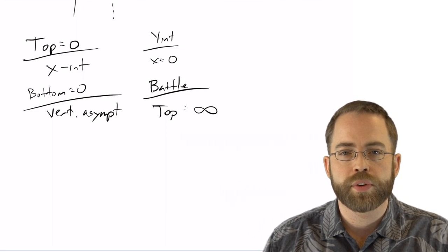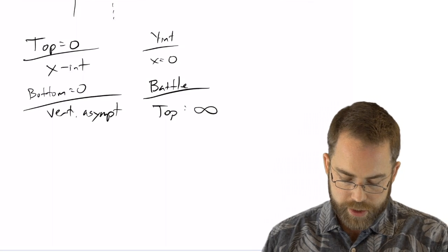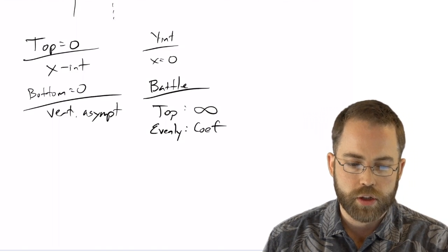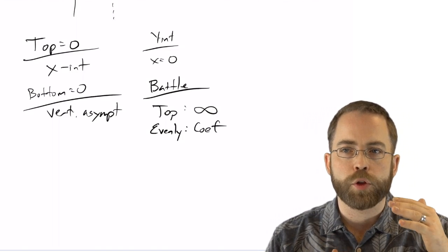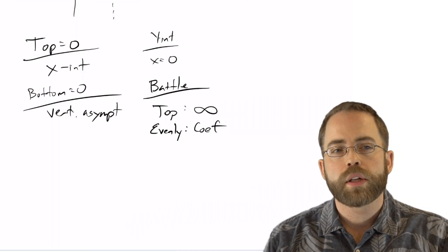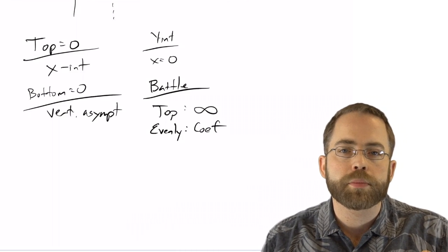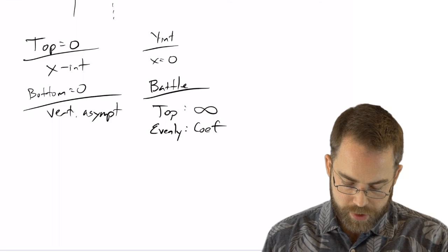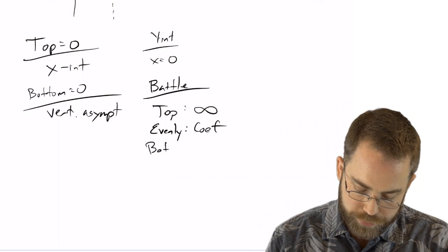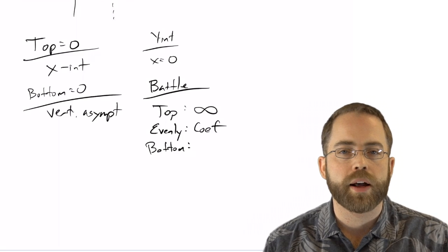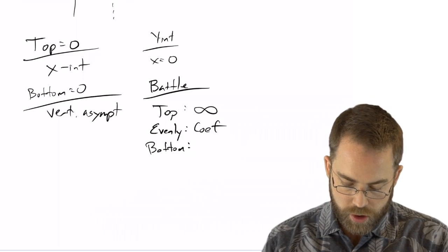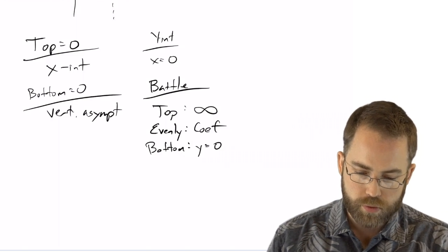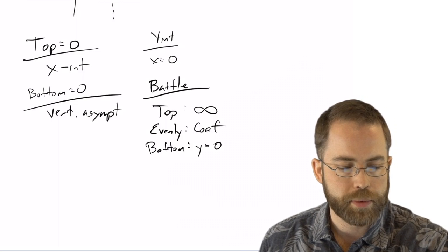That's going to tend off towards infinity or negative infinity. But if they're evenly matched, then you need to look at their coefficients — if you have x-squared on top and x-squared on bottom as the highest degree, you compare coefficients. And if the bottom wins, what happens when a fraction is growing faster on the bottom than on top? That's going to tend off towards zero — you'll have a horizontal asymptote at zero.